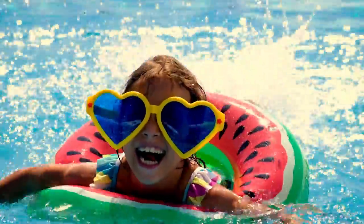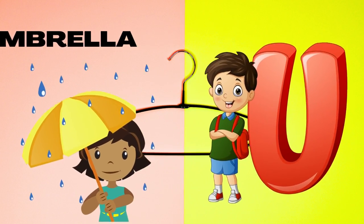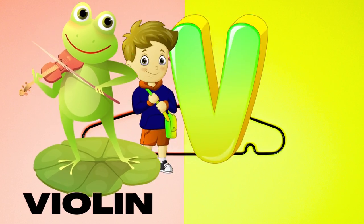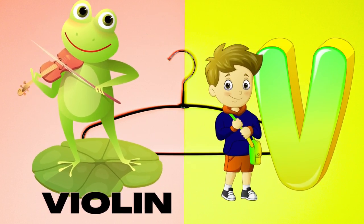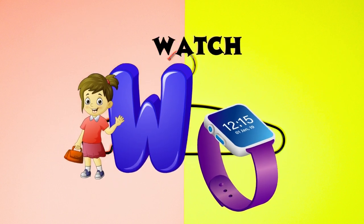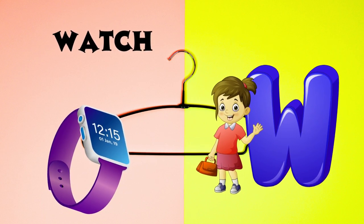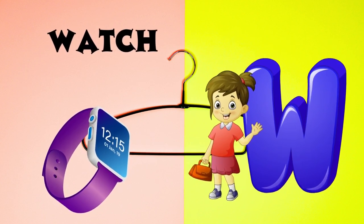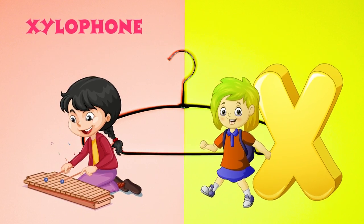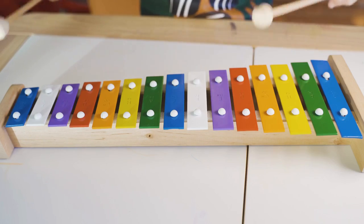U is for umbrella, u-u-umbrella. V is for violin, v-v-violin. W is for watch, w-w-watch. X is for xylophone, x-x-xylophone.